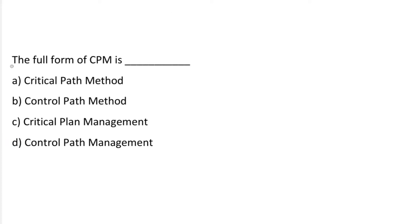Next question: the full form of CPM is — Option A: Critical Path Method. Option B: Control Path Method. Option C: Critical Plan Management. Option D: Control Path Management. The correct answer is option A, Critical Path Method.